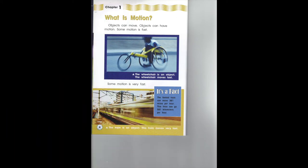Chapter 1: What is motion? Objects can move. Objects can have motion. Some motion is fast. The wheelchair is an object — the wheelchair moves fast. Some motion is very fast. It's a fact: the fastest train can move 361 miles per hour. This train can go 581 kilometers per hour. The train is an object. This train moves very fast.